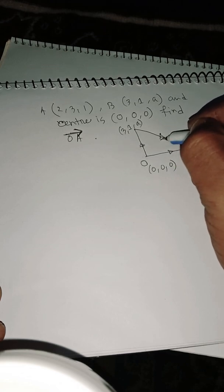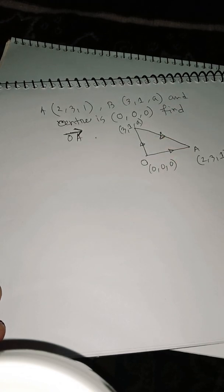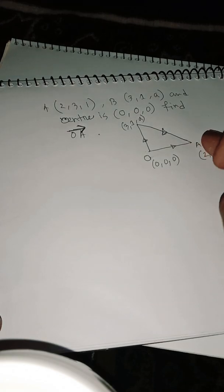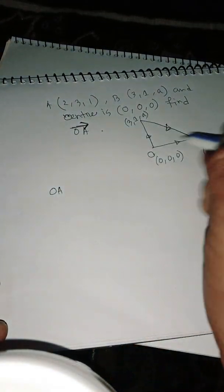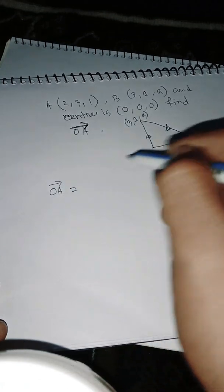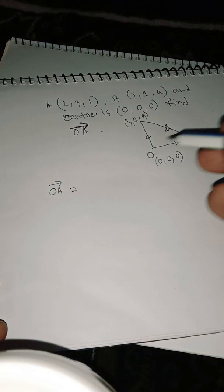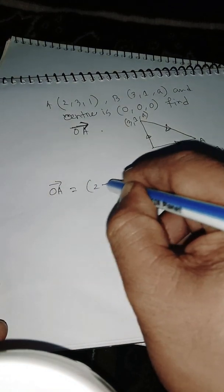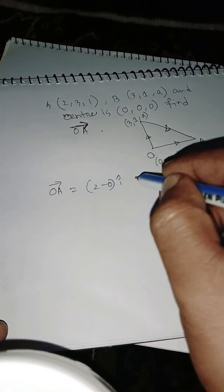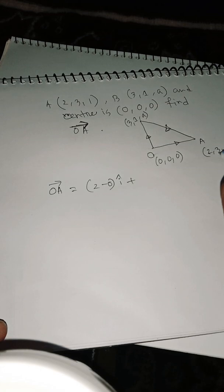We have to find OA vector. So OA vector is: (2 minus 0) i unit vector plus (3 minus 0) j unit vector plus (1 minus 0) k unit vector.